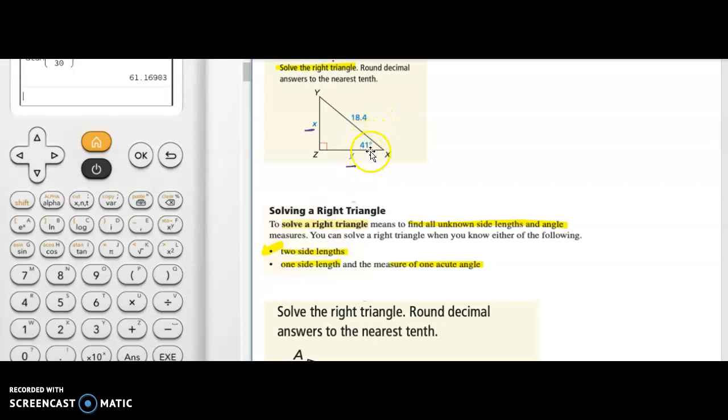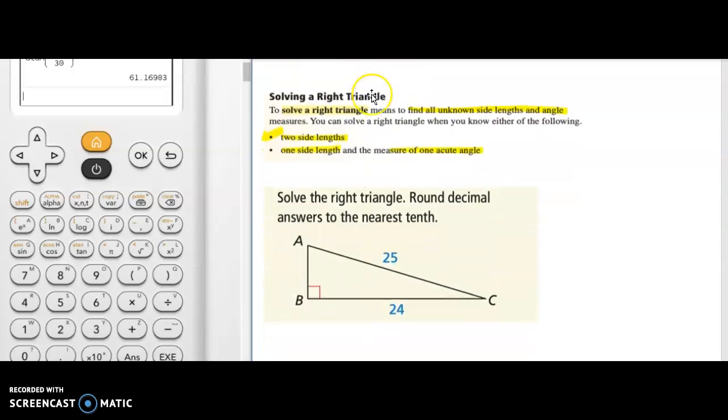That means it can be two sides. You can solve a right triangle when you know either of the following. When either two sides are given to you or one side length and the measurement of one acute angle is given. So that is what is happening in this one. They have given you the measurement of one acute angle right here which is 41. 90 degrees already there. And the one side length is there. Let me solve one question for you and then you can come back and try this question.